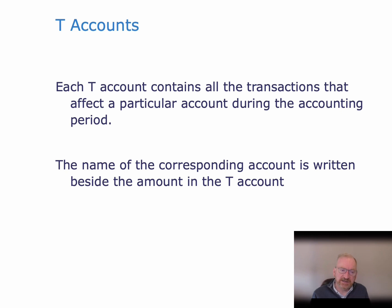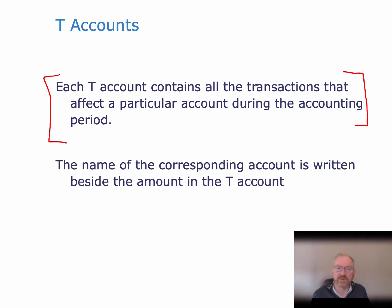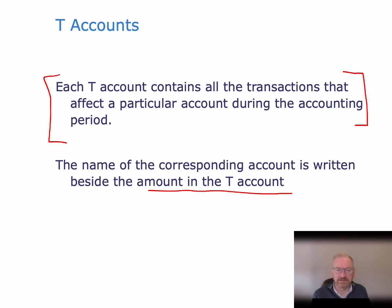Each T-account contains all the transactions that affect a particular account during the accounting period — this is organizing by account. Journal entries were organized by transaction, which is a different thing. The name of the corresponding account is written beside the amount in the T-account.